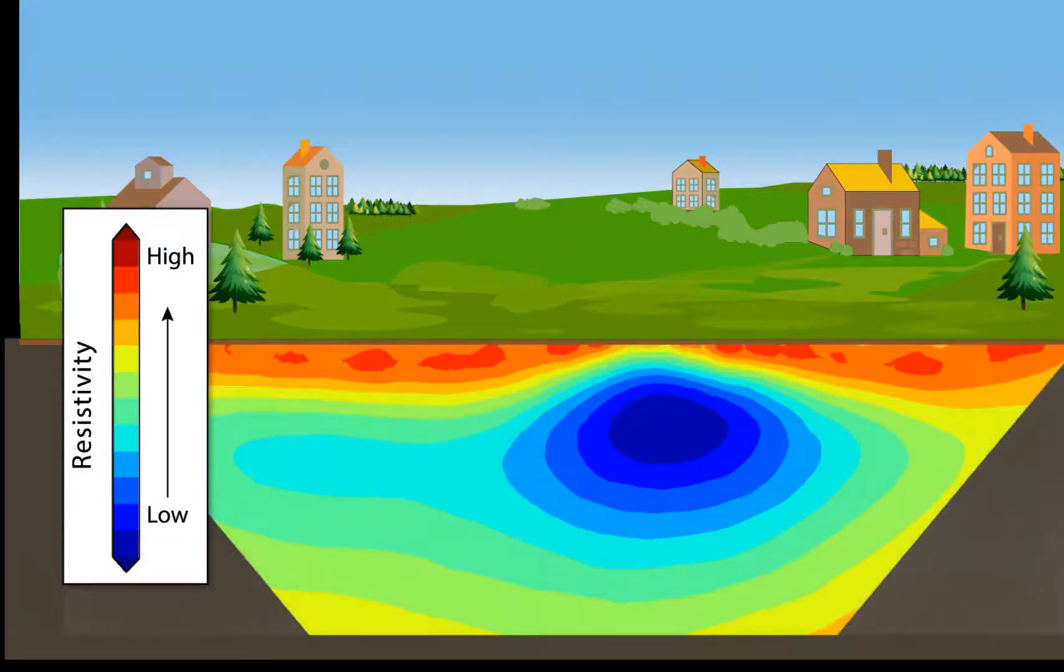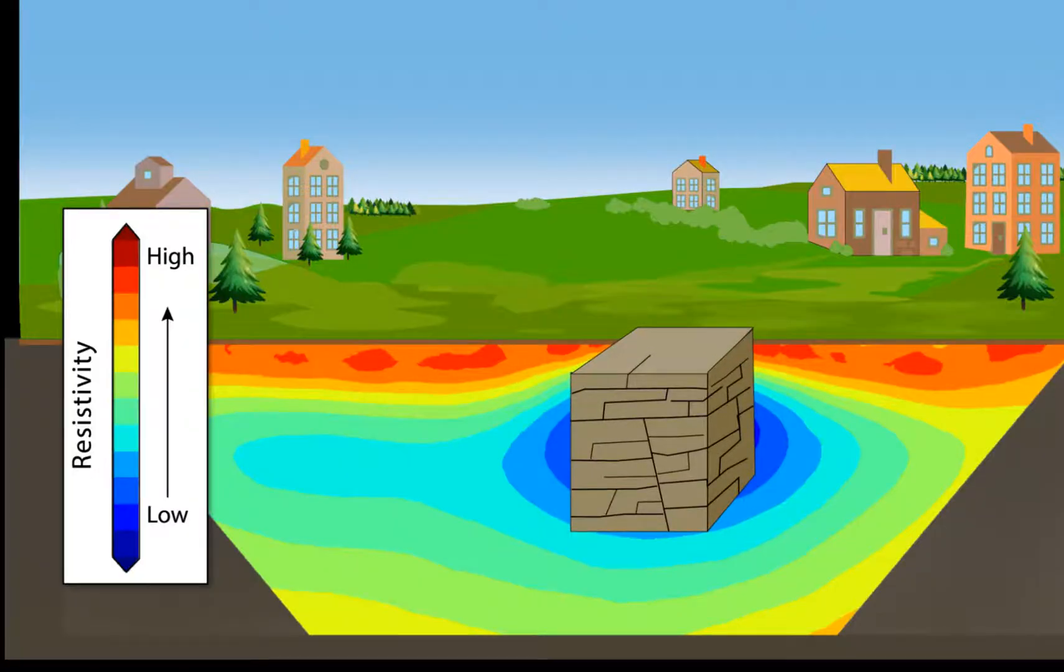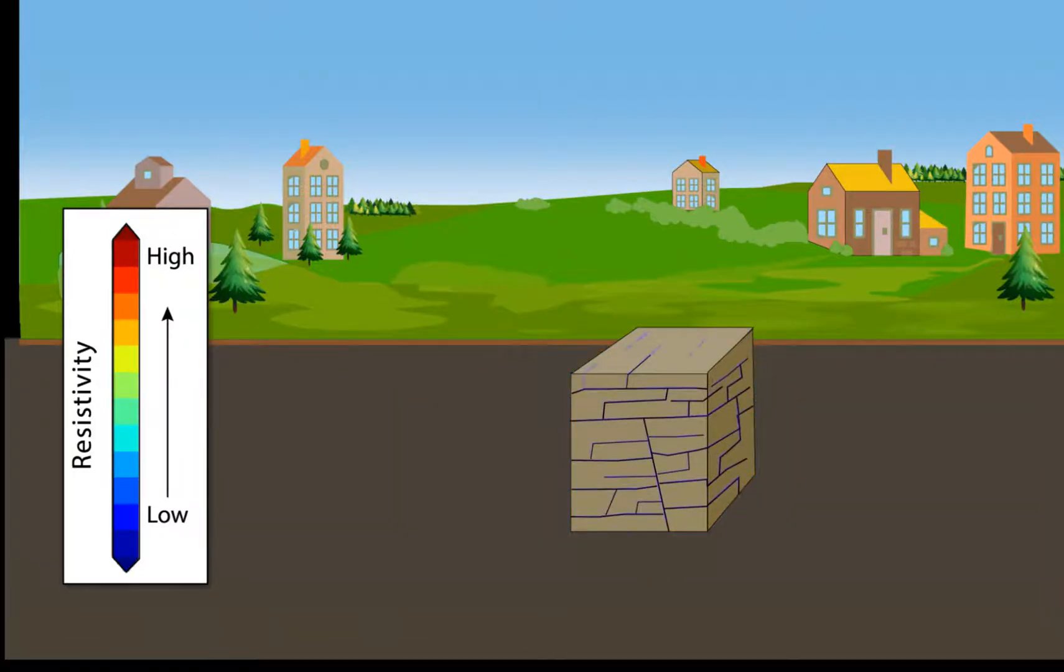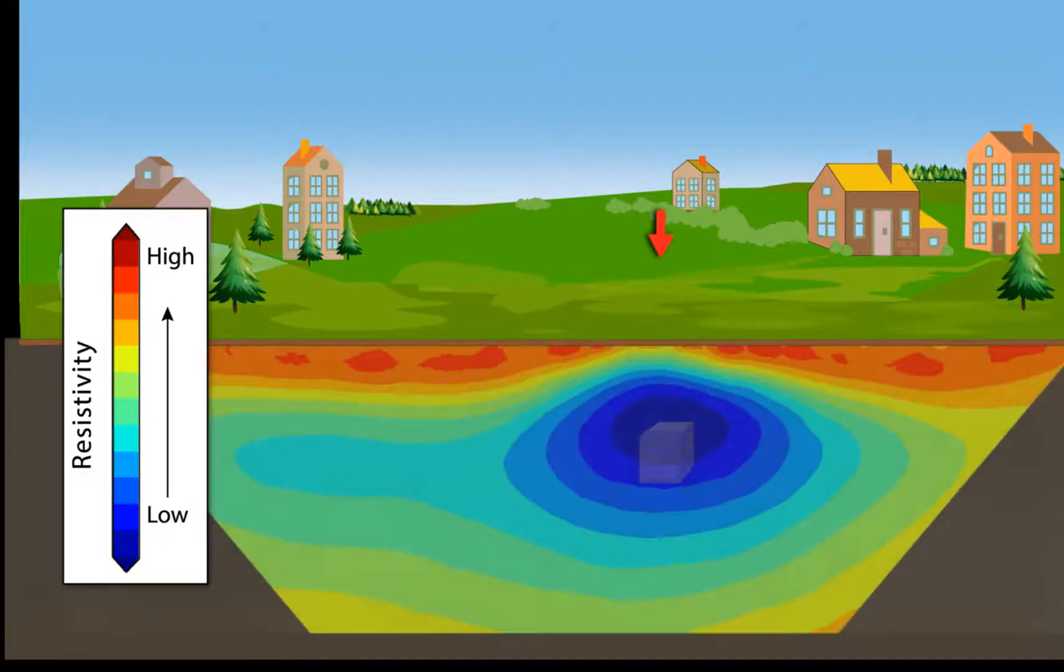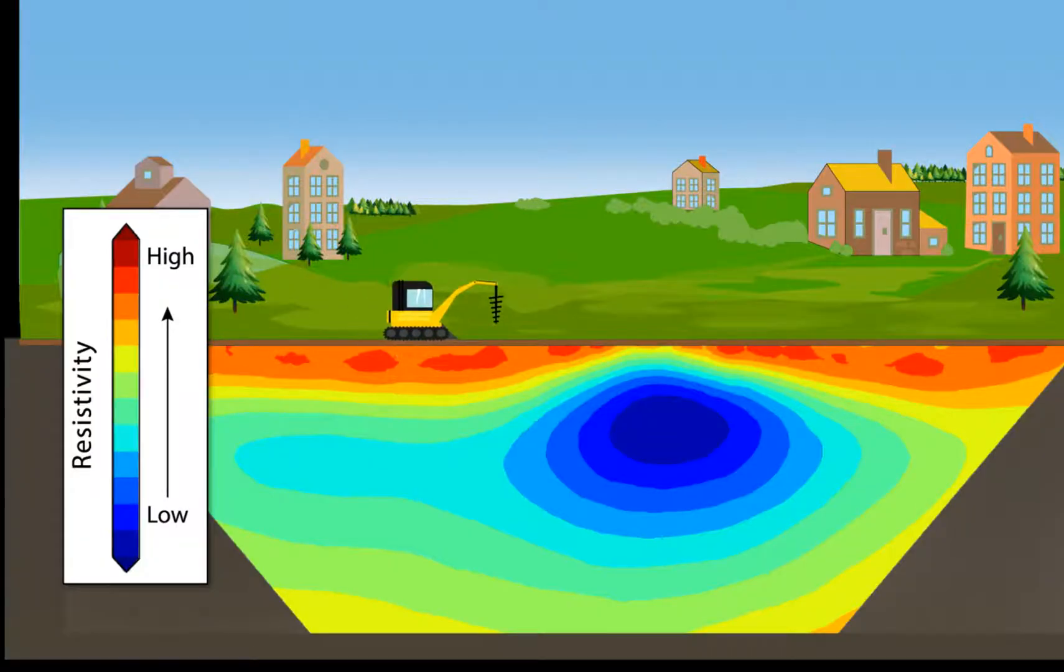Back to our question of where to drill. Recall that the fractured rock that will be easiest to pump from will have a low resistivity. The ERT profile shows a low resistivity zone here. It's shallowest at this location, so this is a spot where it appears that you wouldn't have to drill as deeply to find the pumpable groundwater.